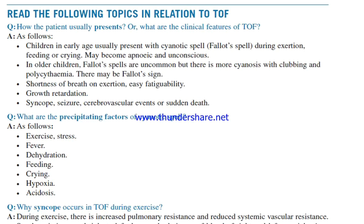Clinical features of tetralogy of Fallot: children in early age usually present with cyanotic spells — Fallot spells — during exhaustion, feeding, or crying, and may become apneic and unconscious. In older children, Fallot spells are uncommon, but there is more cyanosis with clubbing and polycythemia. Other features include shortness of breath on exertion, easy fatigability, growth retardation, syncope, seizures, cerebrovascular events, and sudden death.